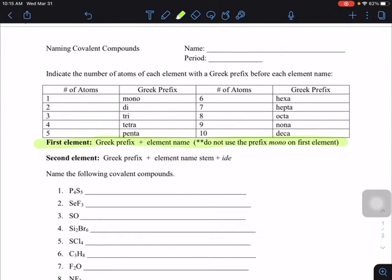use your Greek prefix plus the element name. You don't change the name at all for the first one, although for the prefix we don't ever use mono on the first element. On the second element, we use our Greek prefix plus the element stem name, and we always change our ending to ide, just like ionic compounds.